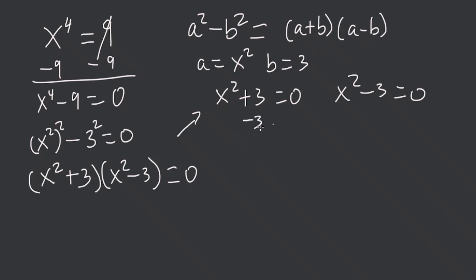Subtracting 3 from both sides, we get that x squared is equal to negative 3. And adding 3 to both sides over here, we get that x squared is equal to 3.